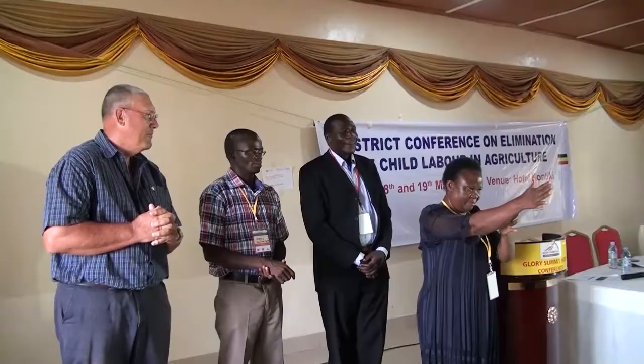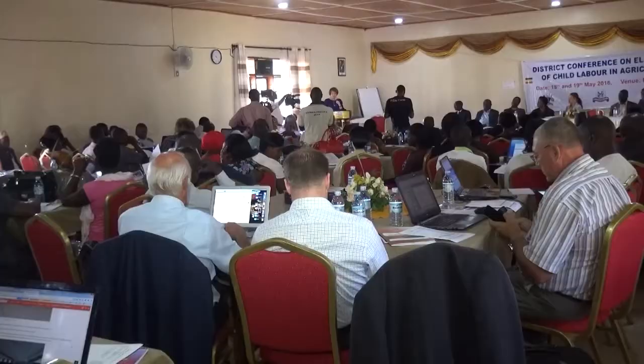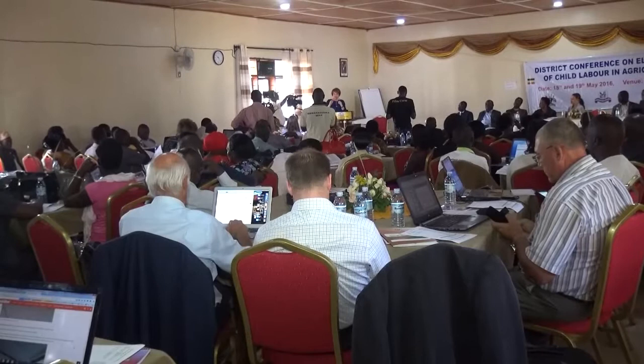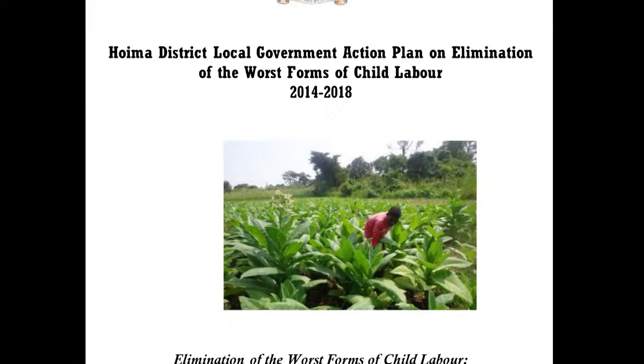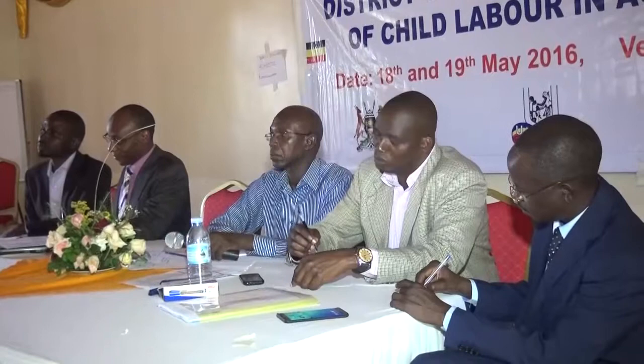The conference provided a needed platform for a cross-sector discussion about child labor in a key agricultural district of Uganda. The conference was the official launch of the Hoima district action plan on child labor, a first of its kind not only in Uganda, but throughout the sub-Saharan region, outlining critical intersectoral commitments and actions needed at the district level to effectively address the root causes of child labor under the Ugandan National Action Plan to eliminate the worst forms of child labor.